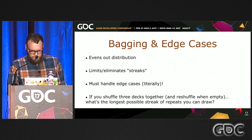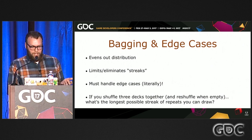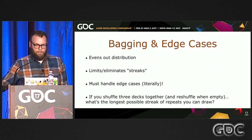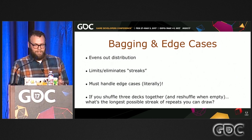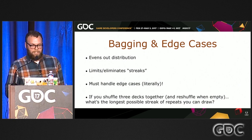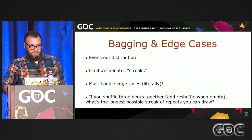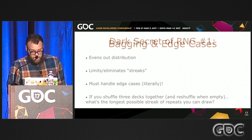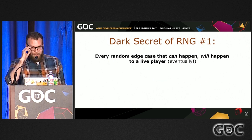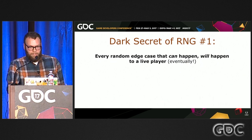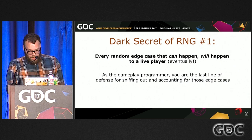Of course, there's an edge case — a literal edge case. If you shuffle three decks of cards together and reshuffle when empty, you might think the maximum streak is three. But at the end of one bag you could get three aces of spades, and then at the start of the next bag you have three more. That edge case is worth considering, especially with randomness, because here's my first dark secret of RNG: every random edge case that can happen eventually will happen, to a live player in a shipped game, if you haven't planned for it.